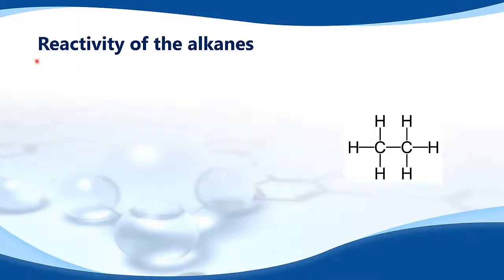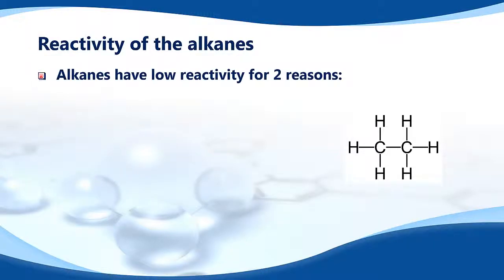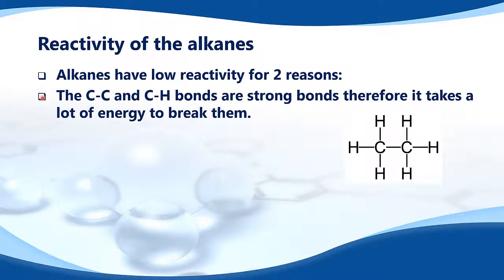The alkanes have low reactivity for two reasons. The first reason is the carbon to carbon and carbon to hydrogen bonds are strong bonds, therefore it takes a lot of energy to break them. Here we have ethane — we have the carbon to carbon bond, that's a strong bond, and we have the carbon to hydrogen bonds, they are also strong bonds. So to break these bonds requires a lot of energy, which makes the alkanes unreactive.